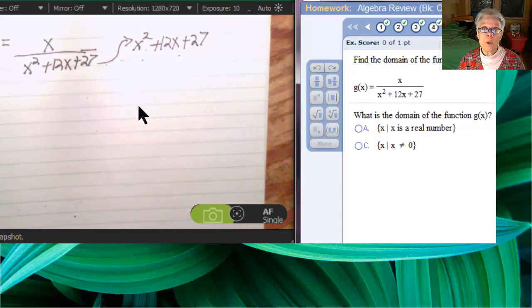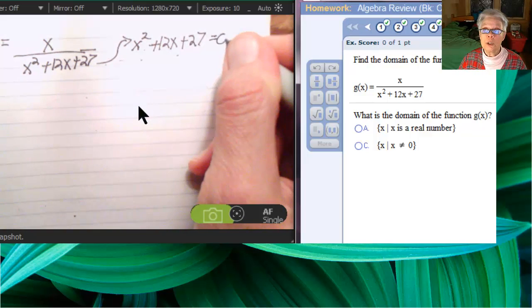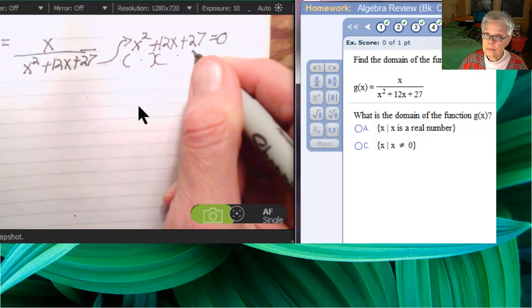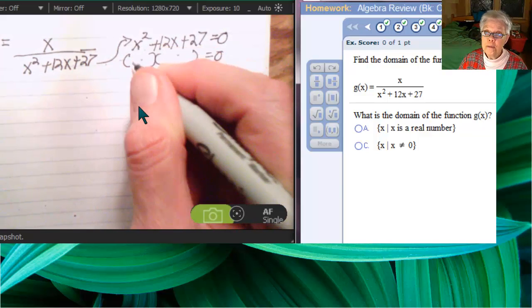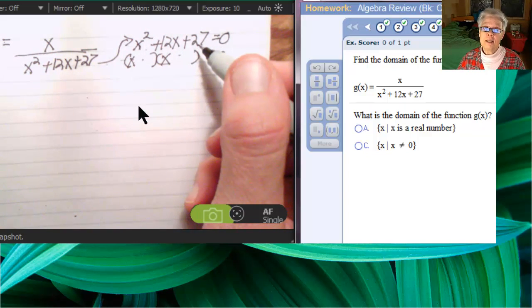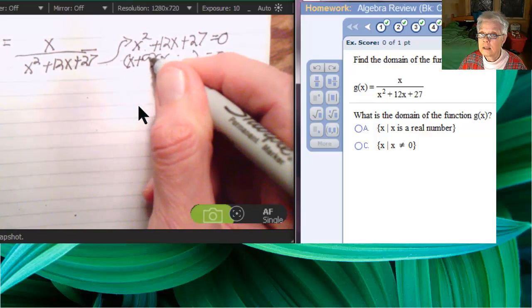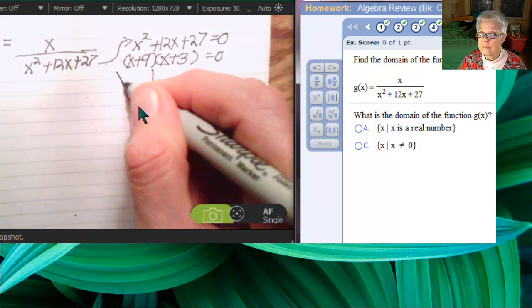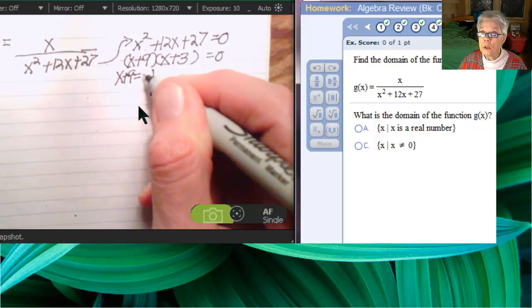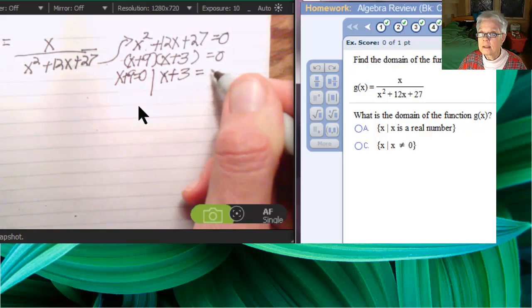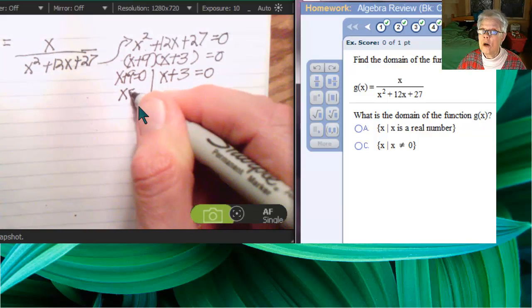Now, this is factorable, so I'm going to factor. However, if you want to use a quadratic formula, you can also do that. I prefer to factor when I can because it's so much faster, and you're less likely to make an arithmetic mistake. So x is going to equal negative 9, and x is going to equal negative 3.